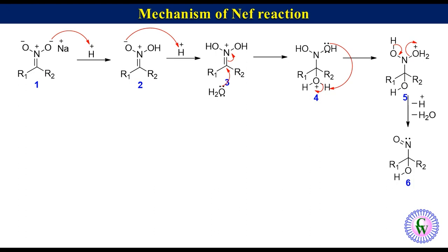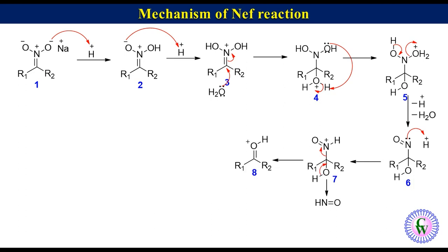Nitrosoalkanol 6 undergoes protonation at the nitrogen atom to produce species 7, which after loss of hyponitrous acid produces protonated carbonyl compound 8. Carbonyl compound 8 undergoes deprotonation to produce the carbonyl compound. Hyponitrous acid decomposes to water and nitrous oxide.